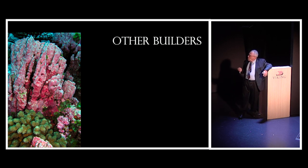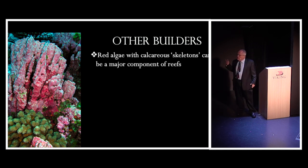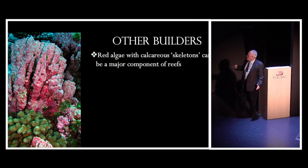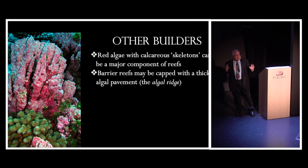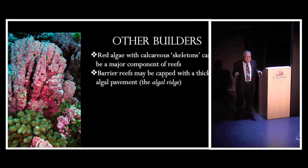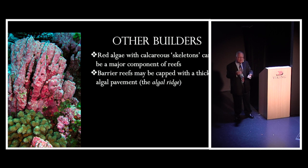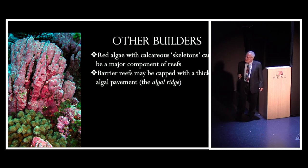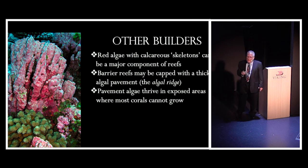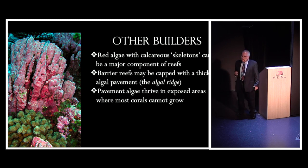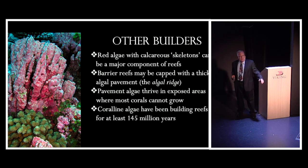Today we also have structures on the reef built directly by red algae — coralline algae — that can build up calcareous skeletons made of calcium carbonate, just like a polyp, and can be a major component of reefs. Barrier reefs exposed to heavy pounding waves will often have a cap on the top built by these algae, which is very important because their skeletons are actually harder and denser than those built by coral polyps. So they protect the reef structure in exposed areas and have been building reefs for about 145 million years.